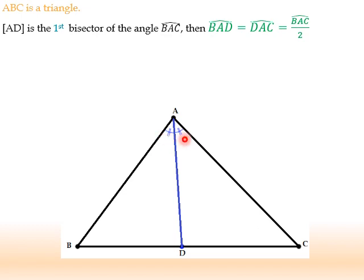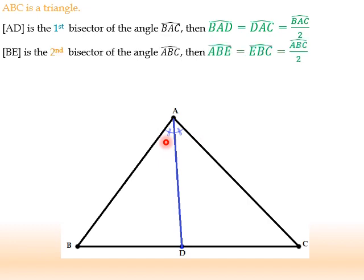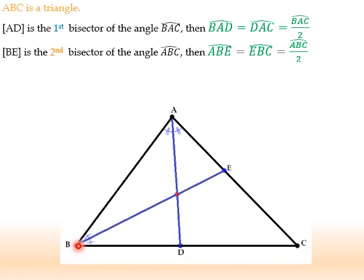So, BAD equal to DAC equal half of BAC. The second bisector is BE. It's issued from B. Now, BE is a bisector, so ABE equal to EBC equal to ABC over 2. It's half the angle ABC.